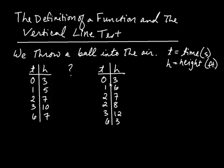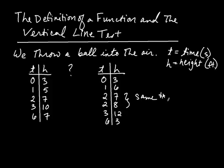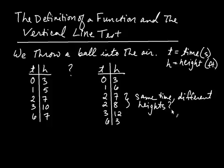Now look at the second table: time is 0, height is 3; time is 1, height is 6; time is 2, height is 7; time is 2, height is 8. That's not possible — the ball can't be both at 7 feet and at 8 feet when the time is 2 seconds. The problem here is that you have the same time but different heights. So this table is impossible and cannot possibly describe the motion of the ball. At 2 seconds, the ball can't be in two places.